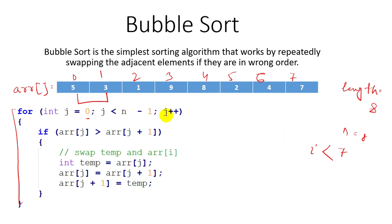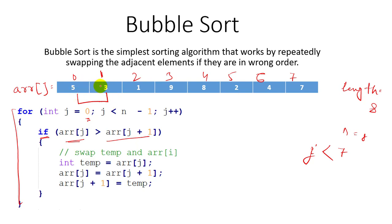So j should be less than seven. Up to j equals six it will satisfy the condition and be true; if j becomes seven then this for loop will stop. Initially j is zero. In the if-block, I am checking: if array[j] is greater than array[j+1] — meaning if the element at j is greater than the element at j plus one — then swap those two values. We can swap using a temporary variable.